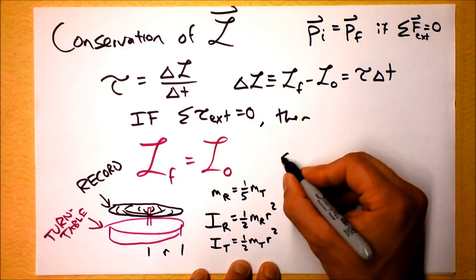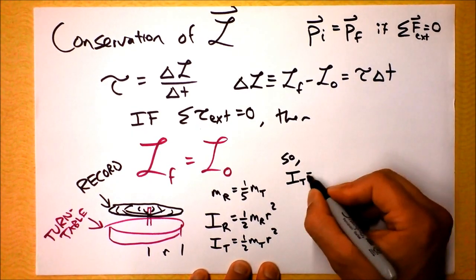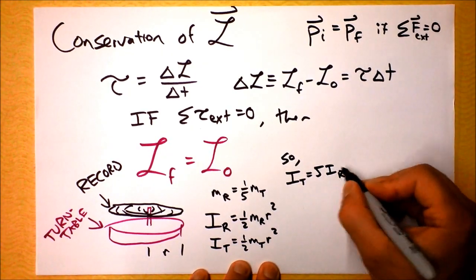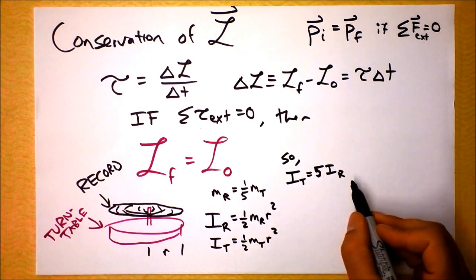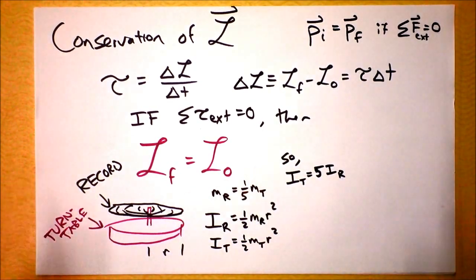So in fact, then we can write that the moment of inertia of the turntable is five times the moment of inertia of the record. Alright. Moment of inertia of the turntable is five times bigger, because it has five times more mass, but they have identical geometric characteristics.